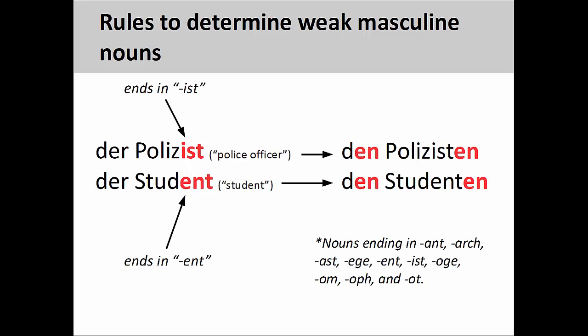Finally, masculine nouns with certain Latin and Greek endings may be weak masculine nouns. These endings include -ant, -arch, -ast, -ege, -ent, -ist, -oge, -om, -oph, and -ot. According to this rule, the nouns der Polizist — police officer — and der Student — the student — are weak masculine nouns.